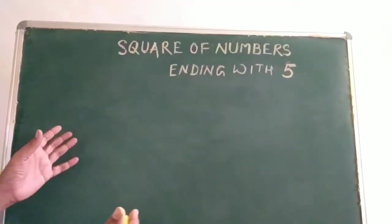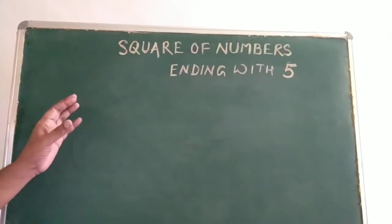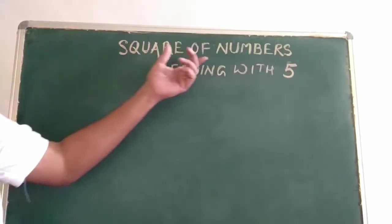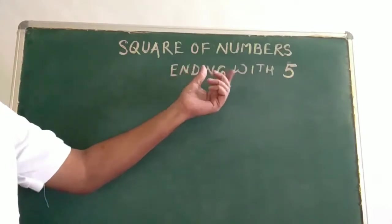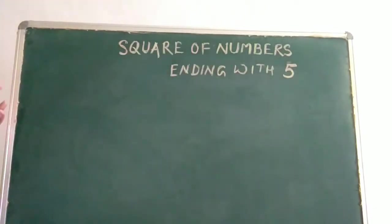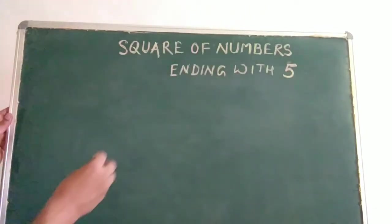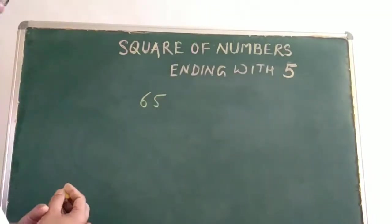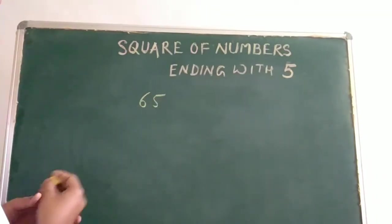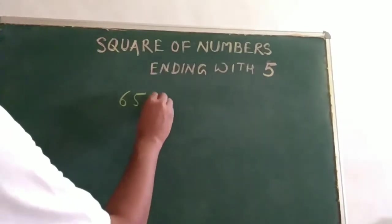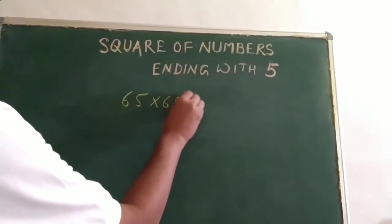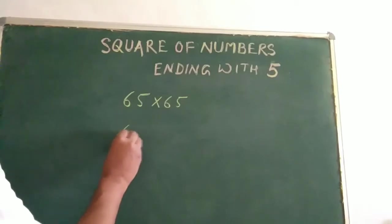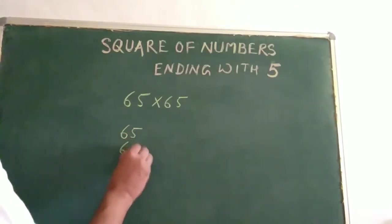In this session, I am going to teach you one simple math trick: how to find out the square of numbers ending with 5. Suppose we take the example of 65. We have to find out the square of 65. Square of 65 means 65 multiplied by 65. So how will we get this answer? 65 multiplied by 65.